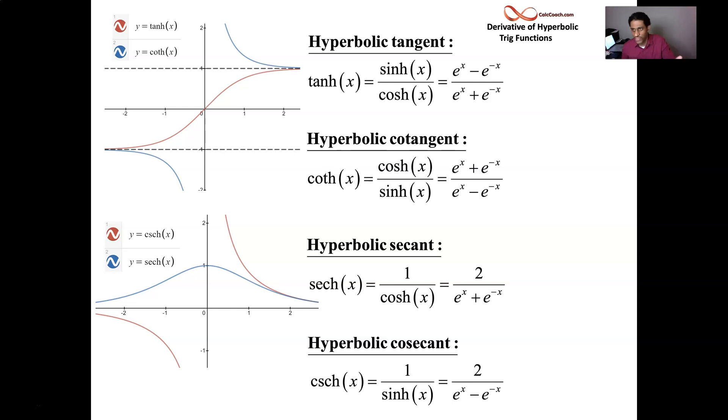So you could say tanh or coth or sech or csch. I don't know, but I'm just going to use the whole word. Hyperbolic cosecant, hyperbolic secant, hyperbolic cotangent, hyperbolic tangent.